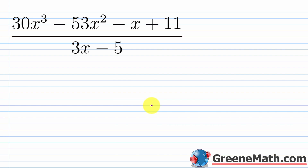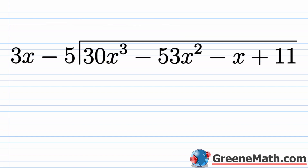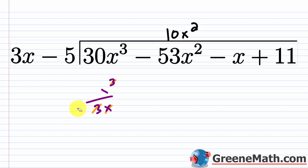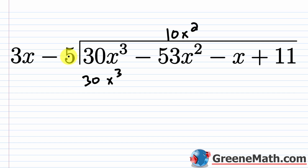Let's look at one more example — pause and try it on your own first. We have 30x cubed minus 53x squared minus x plus 11 over 3x minus 5. Let's start with polynomial long division. We say 30x cubed over 3x: 30 divided by 3 is 10, and x cubed over x is x squared, so this gives 10x squared.